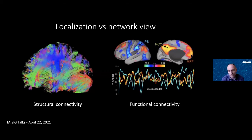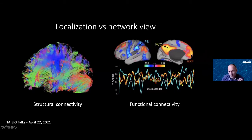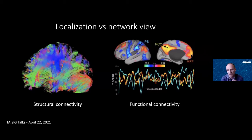Structural connectivity refers to the anatomical or structural connections between two brain regions, which can be examined using diffusion imaging. Functional connectivity relates to the temporal correlation in activation between different brain regions — as shown here, the posterior cingulate cortex and medial prefrontal cortex are nicely correlated, indicating they are functionally connected.